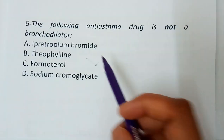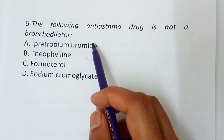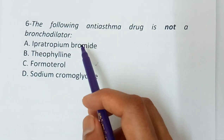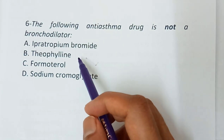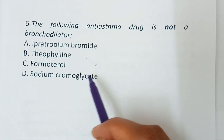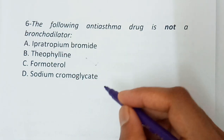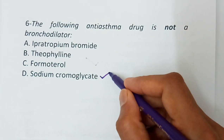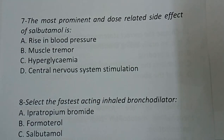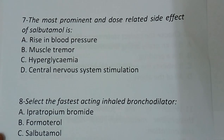Question number six: The following anti-asthma drug is not a bronchodilator — ipratropium, theophylline, formoterol, or sodium cromoglycate. The correct answer is sodium cromoglycate.